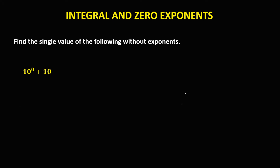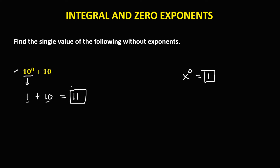For the next given: any number with exponent 0 always equals 1. So 10 to the power 0 equals 1, then plus 10. Simplifying: 1 plus 10 gives us 11.